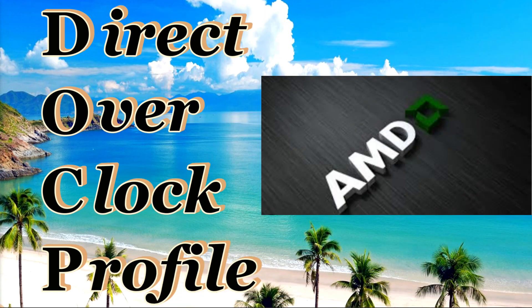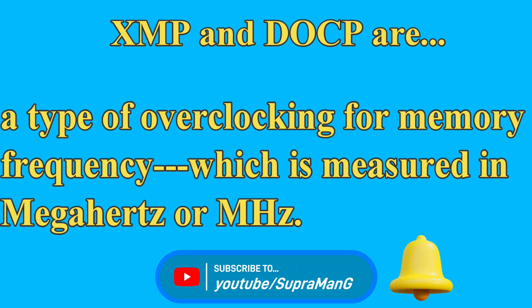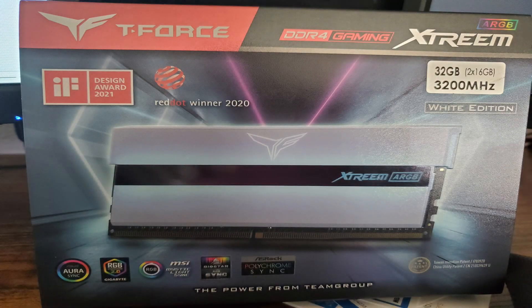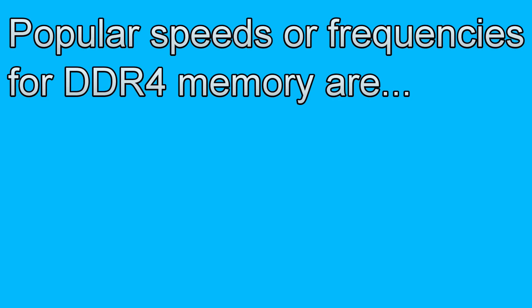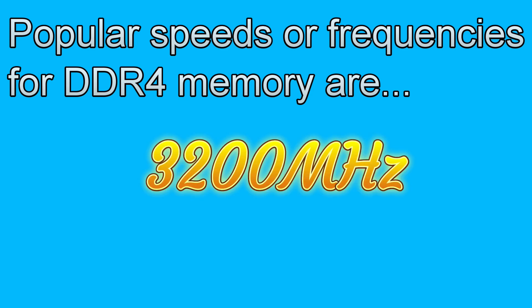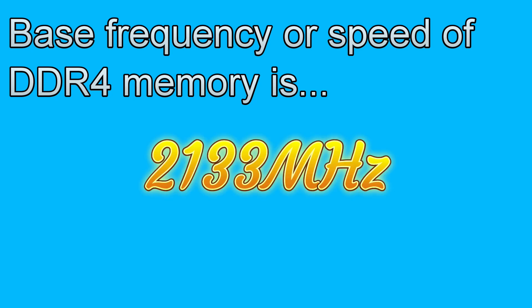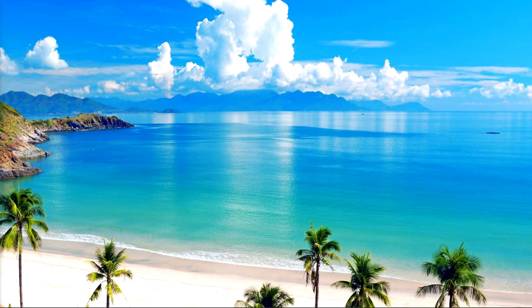stands for Direct Overclock Profile on AMD systems. But first, what is XMP and DOCP? XMP and DOCP is a type of overclocking for memory frequency, which is measured in megahertz or MHz. When you receive memory that you purchase, on the front of the packaging it will show you the speed or frequency. The higher the frequency number, the faster the memory. The more popular speeds or frequencies for DDR4 memory are 3200 MHz and 3600 MHz. When you install memory into the computer, it will state 2133 MHz or 2166 MHz — this is the base frequency or speed of DDR4 memory.